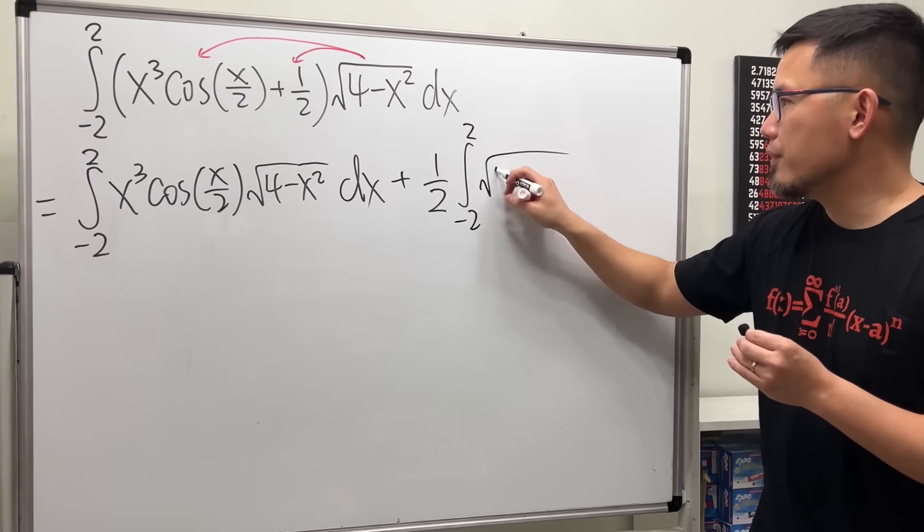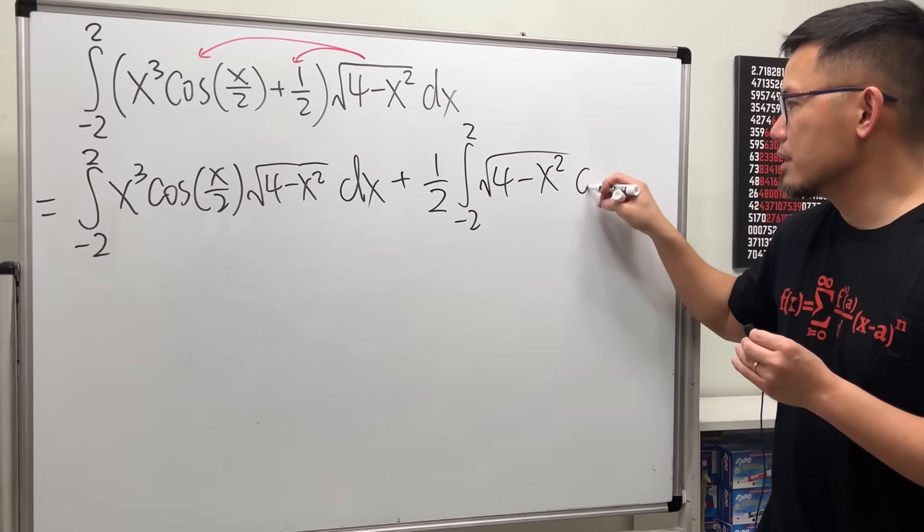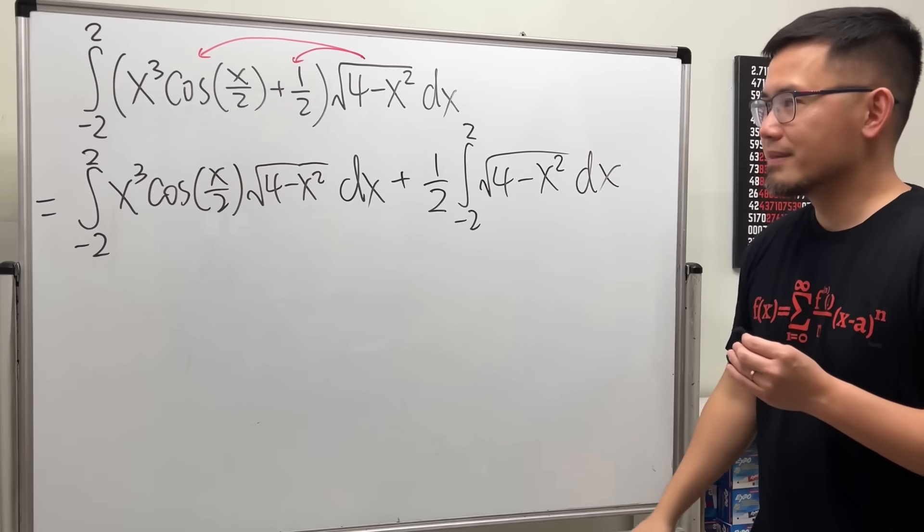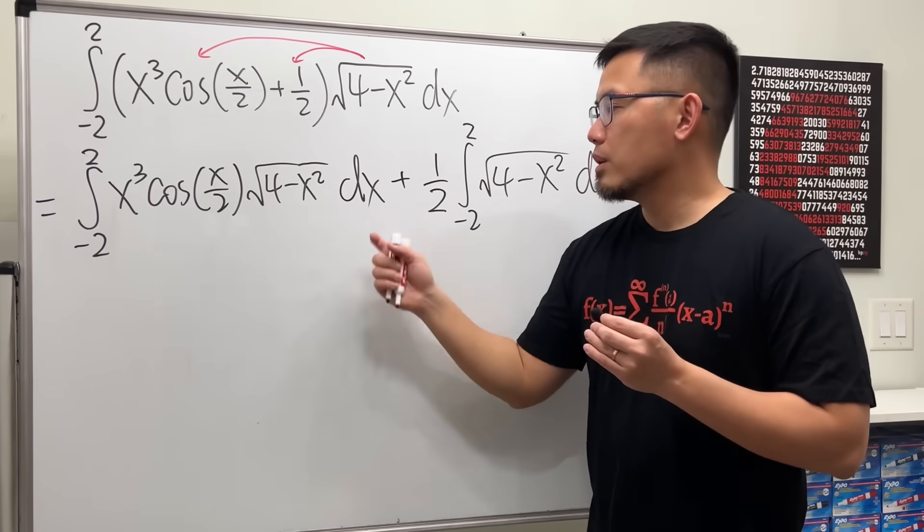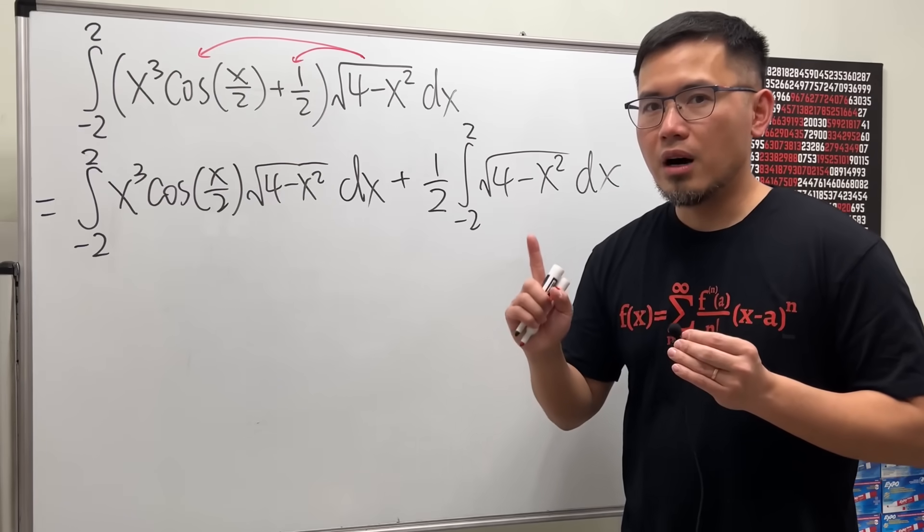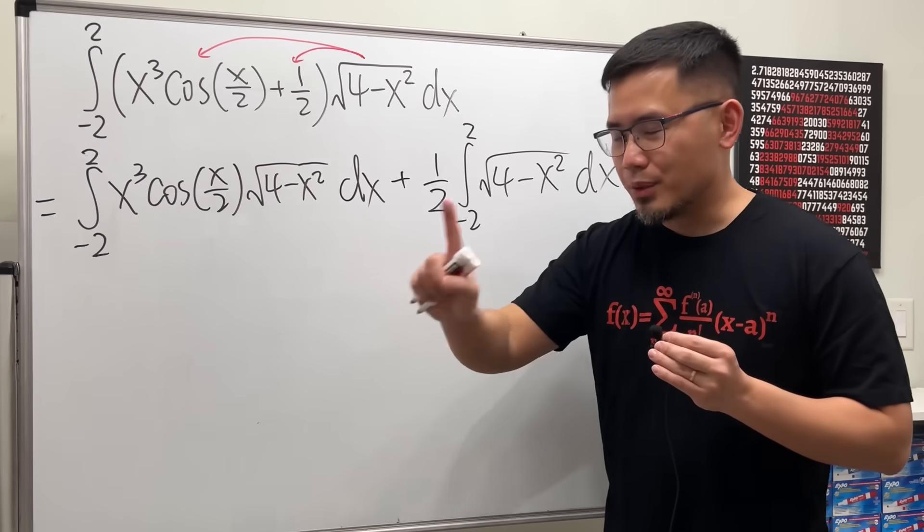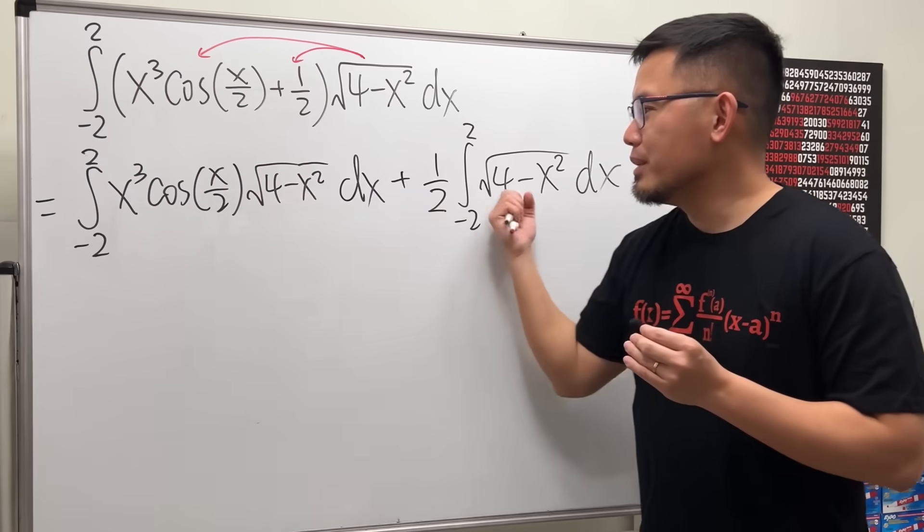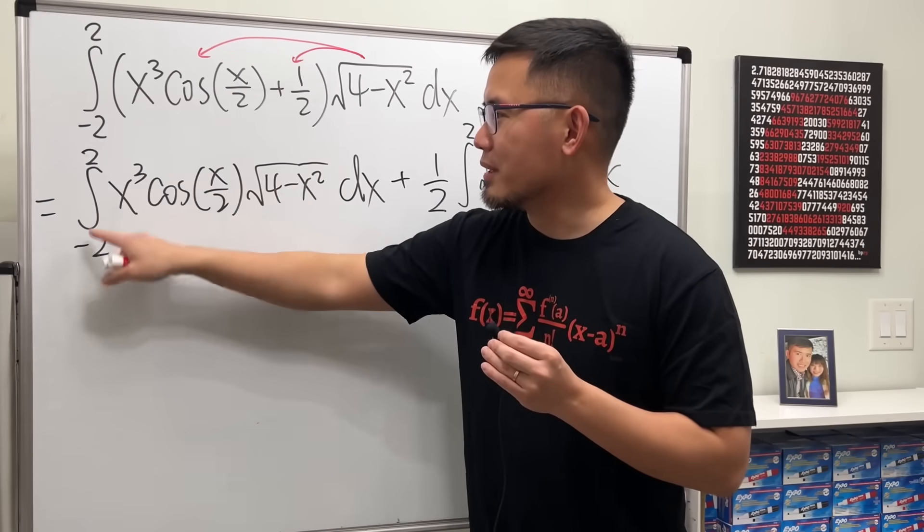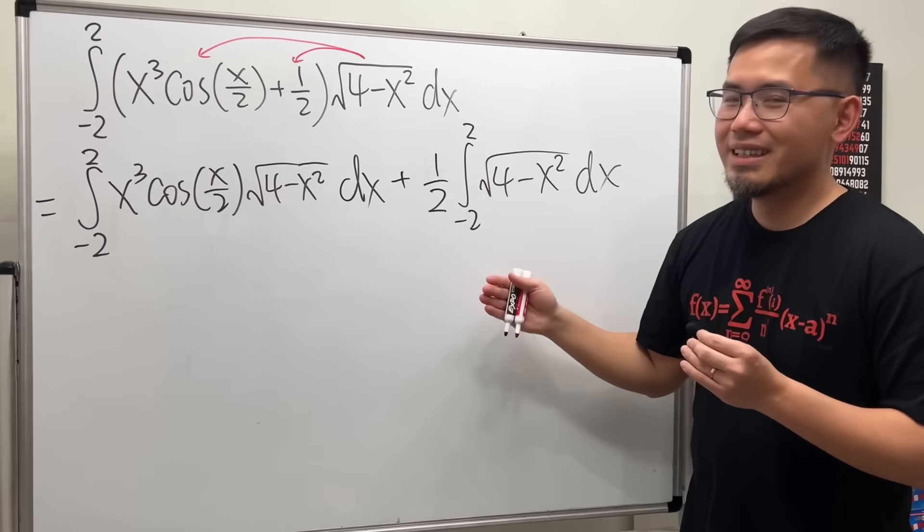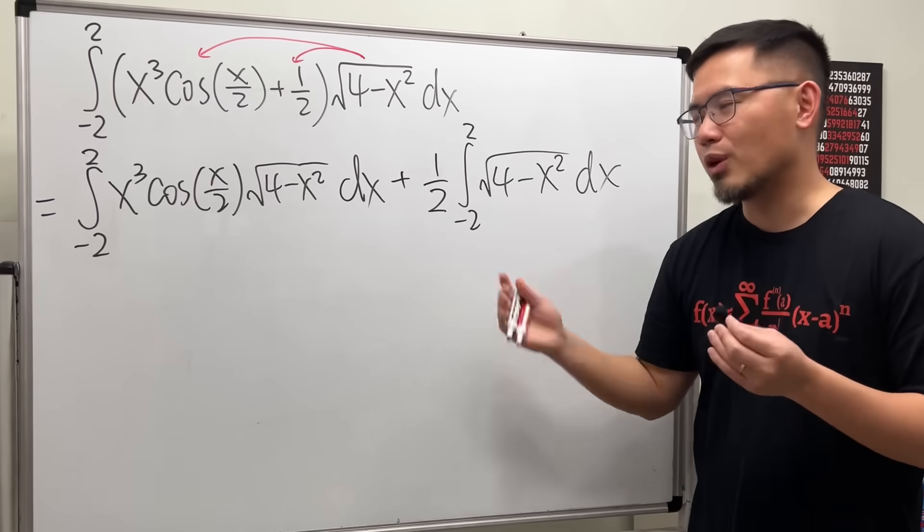Then we just have square root of 4 minus x squared dx like this. This is the idea, because integrations are linear in the sense that linearity of integration is that when you are adding two integrals, if they go from the same number to the same number, you can just put inside together.